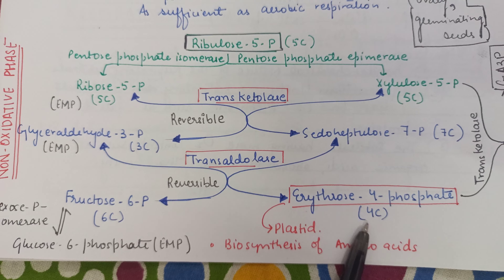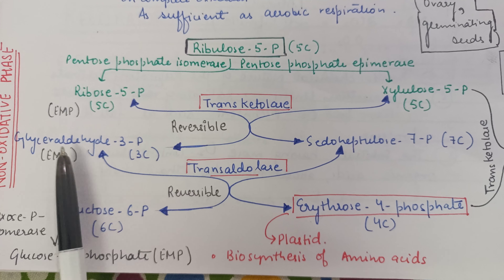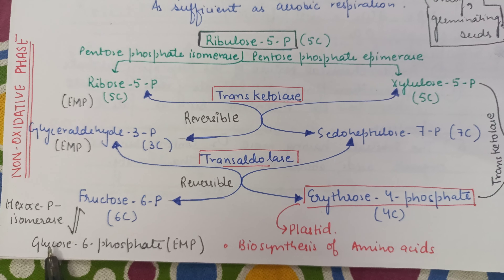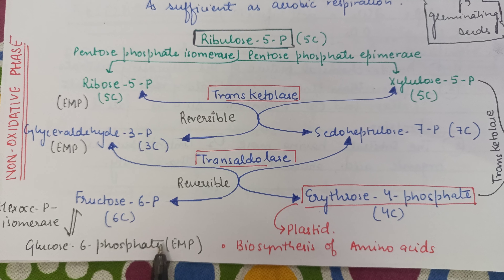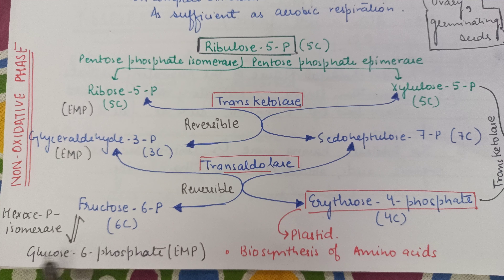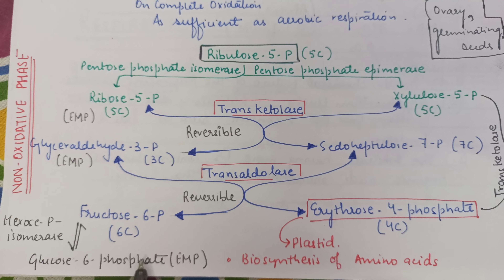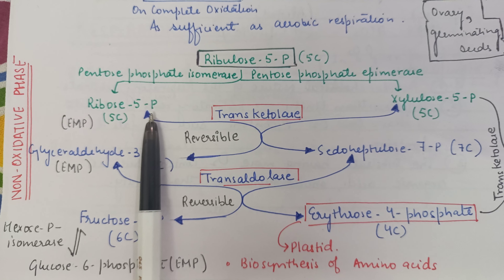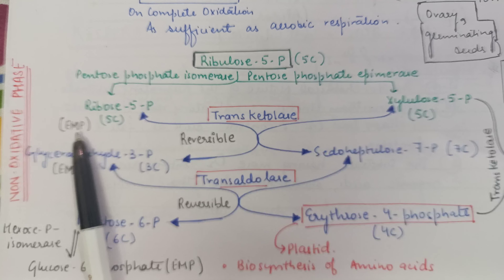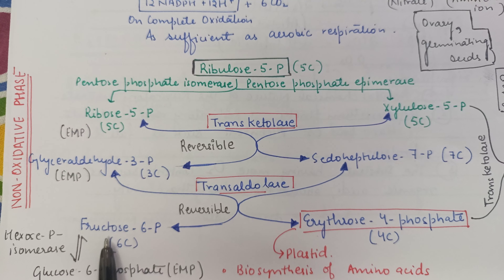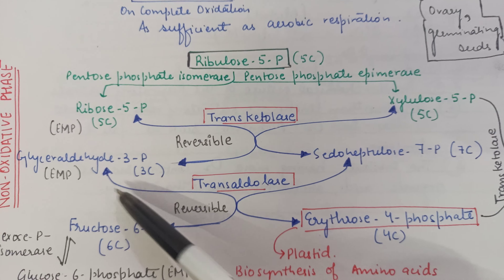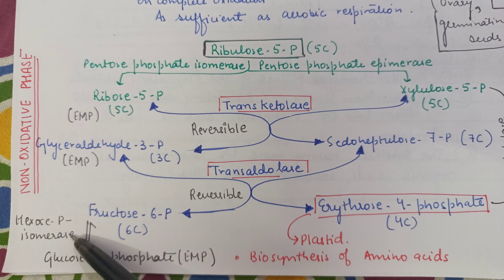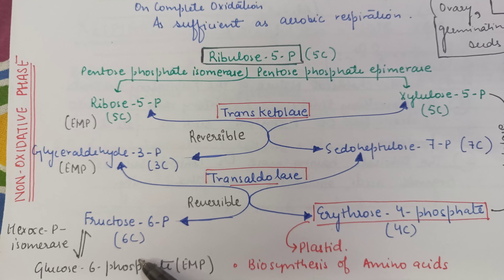Glyceraldehyde-3-phosphate and sedoheptulose-7-phosphate then combine in the presence of transaldolase to produce fructose-6-phosphate (6-carbon) and erythrose-4-phosphate (4-carbon) — again totaling 10 carbons. Fructose-6-phosphate can reversibly convert into glucose-6-phosphate, which can then enter glycolysis. In glycolysis, glucose-6-phosphate or glyceraldehyde-3-phosphate can also enter, effectively linking PPP back to glycolysis via hexose isomerase.